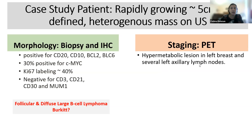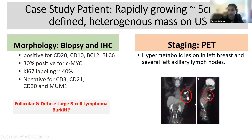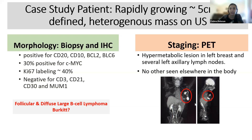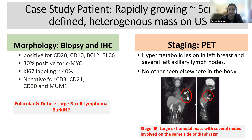There's a subcategory called Burkitt, which is related to cMYC and has a much worse prognosis. Burkitt lymphoma usually involves a translocation where part of the cMYC gene breaks off and goes to a different chromosome, getting very upregulated. They would need a genetic study to look for that translocation. Germinal origin is a better prognosis than ABC. On the PET scan, they see a hypermetabolic lesion in the left breast and several left axillary lymph nodes — all on one side of the diaphragm, which is stage two because of multiple nodes and an extranodal site.